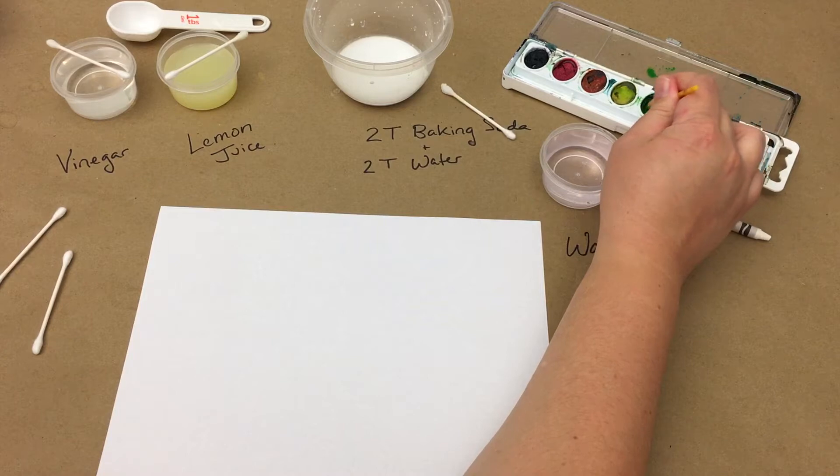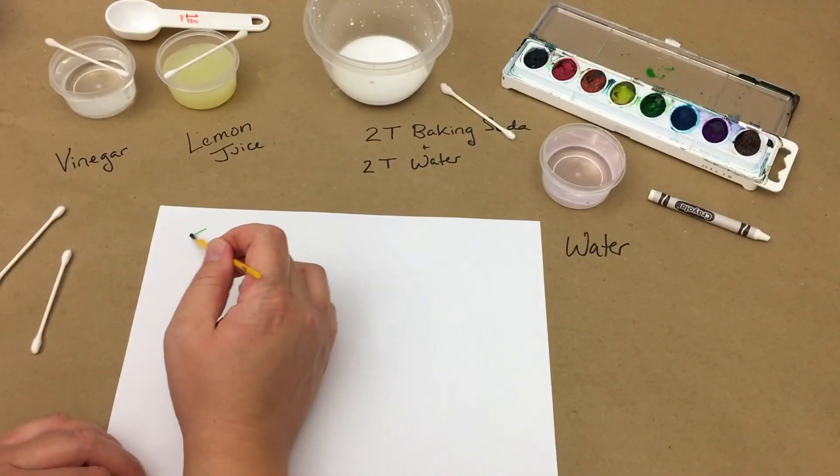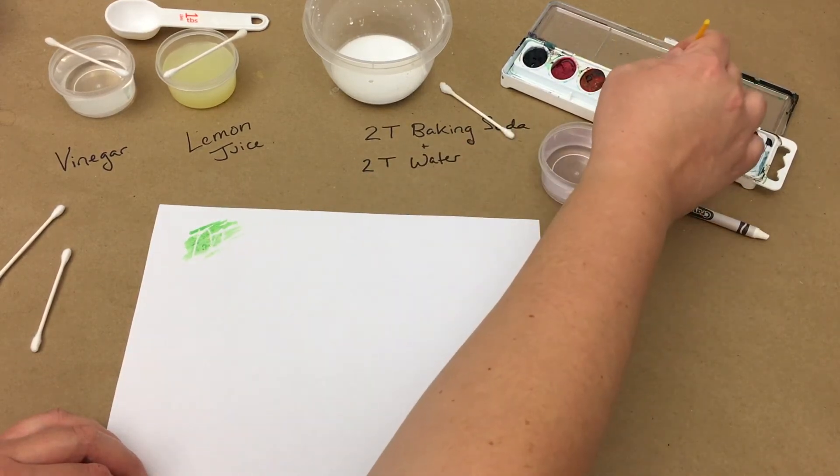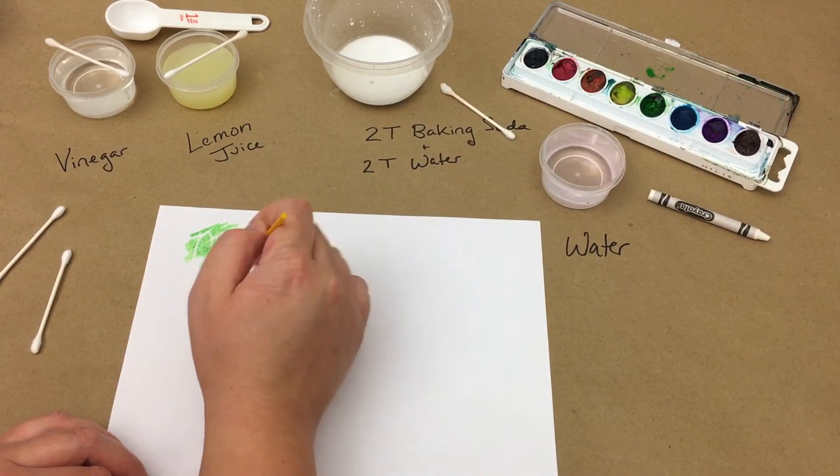Since I'm revealing my own message, I know where I wrote things. However, if you're revealing a message you received from someone else, you will need to paint across the entire paper, not just in the spots where you think there might be words.